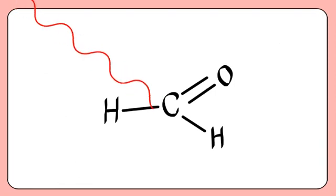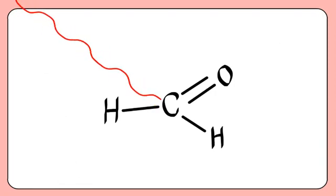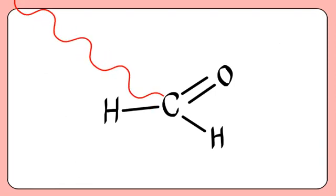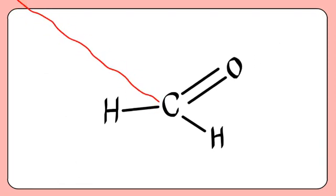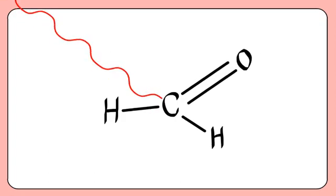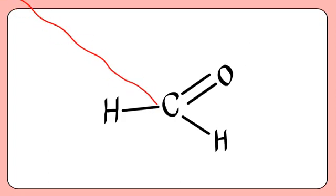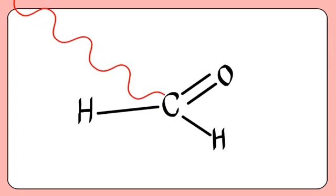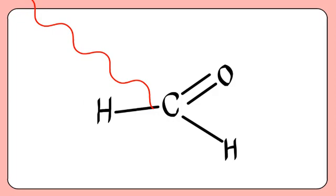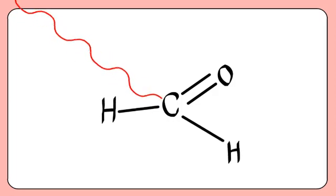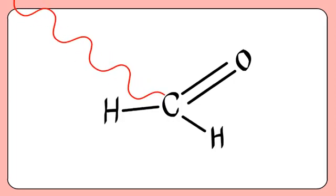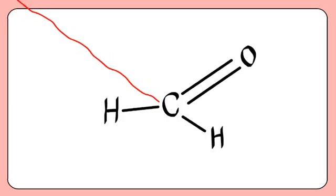Infrared radiation can cause bonds of molecules to vibrate by stretching and bending them. The frequency of the infrared radiation which causes the bond to vibrate can be characteristic of the bond. For example, consider the carbonyl group C double bond O.